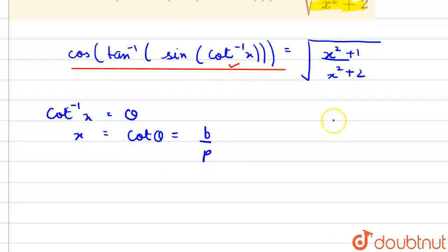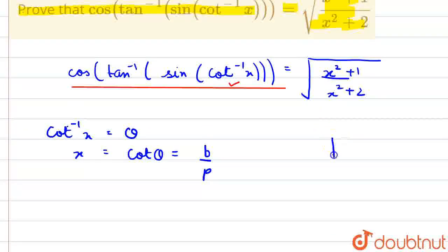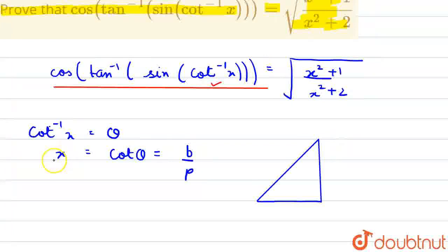Now, in order to understand this in efficient manner, let us draw a triangle. We can clearly see that this is x by 1. So, base is x, perpendicular is 1.